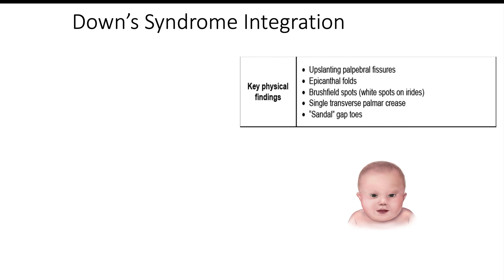The first thing we'll go through are the key physical findings. Down syndrome patients are going to have up-slanting palpebral fissures and prominent epicanthal folds — these are the eye findings you have to keep in mind. If you see a picture on your USMLE with a Down syndrome face and they're zooming in on the eyes, showing pale centers on the colored portion of the iris, you're going to be thinking about Brushfield spots. Down syndrome patients also have a single transverse palmar crease as well as sandal gap toes — these are the MSK findings.